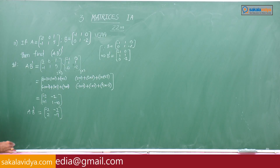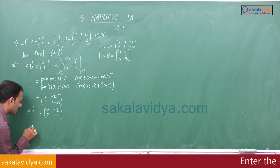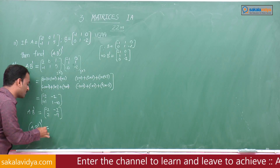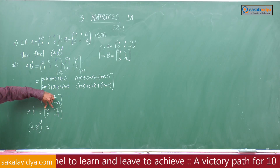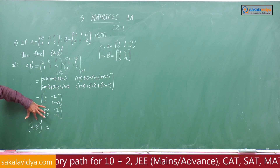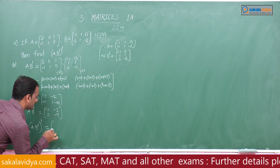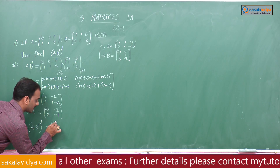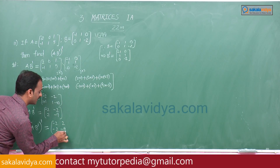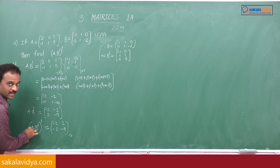The required value is A into B transpose whole transpose. So we transpose the product matrix. The result A·B^T equals [[-2, -2], [2, -9]]. Transposing: first row becomes first column, second row becomes second column. Therefore A into B transpose whole transpose equals [[-2, 2], [-2, -9]].